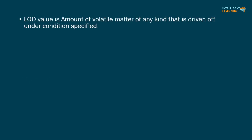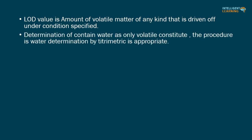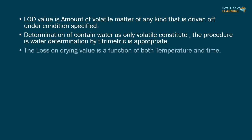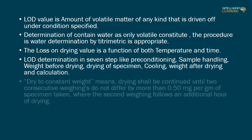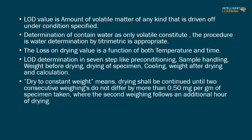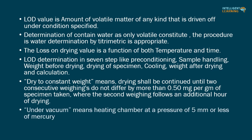Key notes of this video: LOD value is the amount of volatile matter of any kind that is driven off under conditions specified. For substances containing water as only volatile constituent, water determination by titrimetric method is appropriate. The loss on drying value is a function of both temperature and time. LOD determination involves 7 steps: preconditioning, sample handling, weight before drying, drying of specimen, cooling, weight after drying, and calculation. Dry to constant weight means drying shall be continued until two consecutive weighings do not differ by more than 0.50 mg per gram of specimen, where the second weighing follows an additional hour of drying. Under vacuum means the heating chamber is maintained at a pressure of 5 mm or less of mercury.